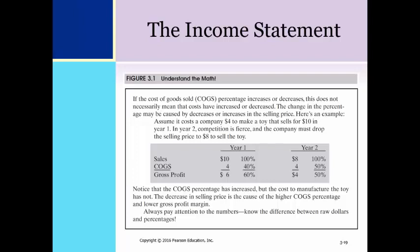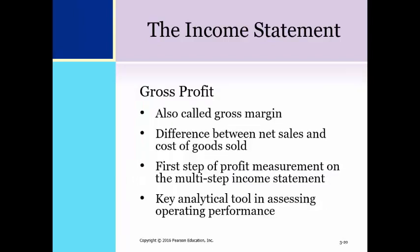It is important to understand that changes in the cost of goods sold percentage can be related either to changes in sales prices or to changes in the amount of expenses. This illustration shows that the cost of goods sold percentage decreased from year one to year two — not because of a change in the cost of goods sold, but from a decrease in the sales price from ten dollars to eight dollars. The cost to manufacture the item did not change between the two years but remained at four dollars per unit; the decrease in sales price was responsible for the lower gross profit in the second year.